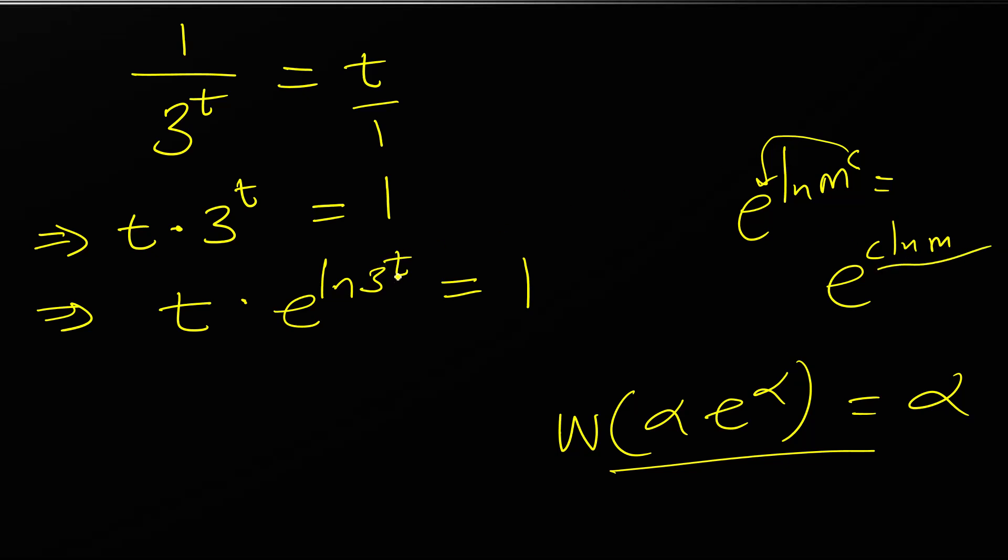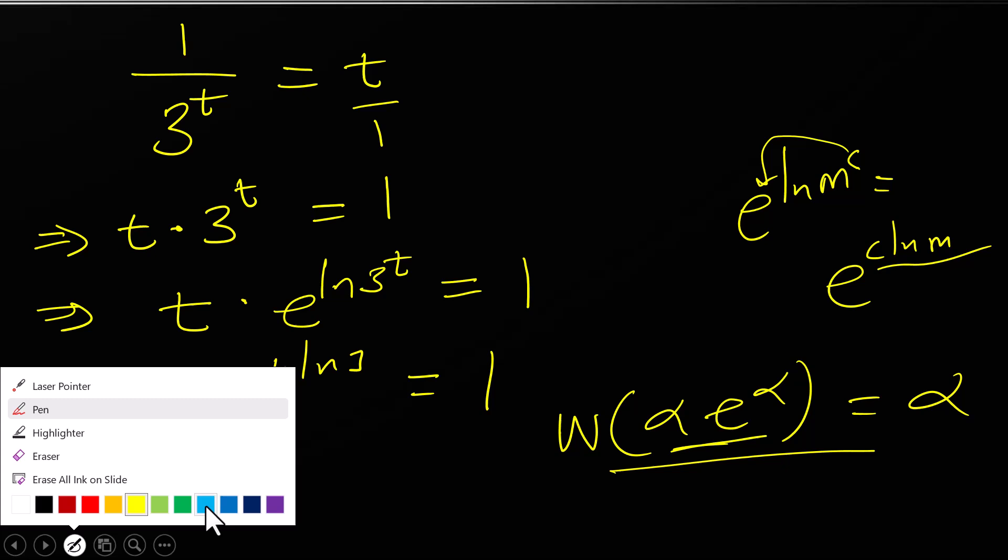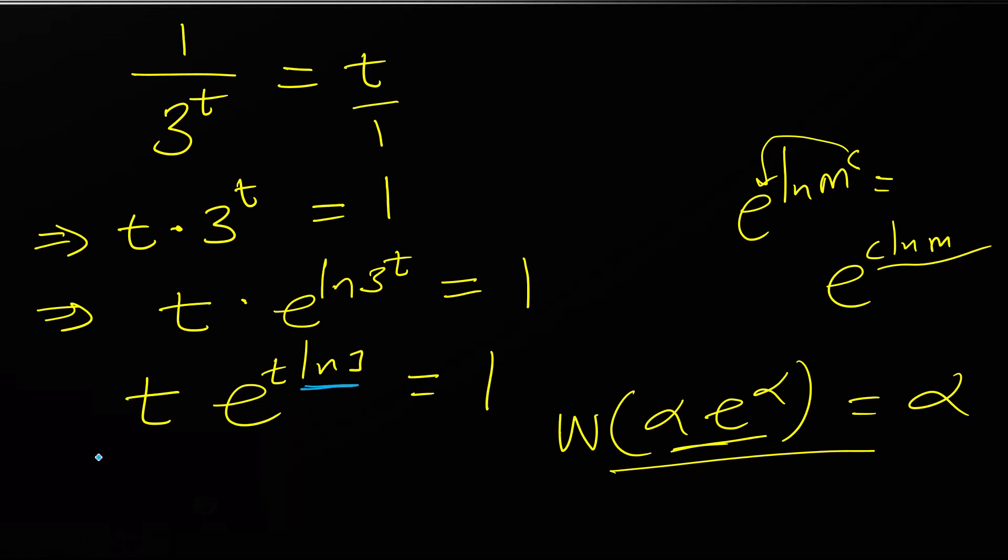We have t times e raised to t ln of 3 equals 1. Remember we are working towards this, so what is here must be equal to what is here. Let's observe that we have t ln of 3 and we have only t. We have ln of 3, this one is missing. What we are going to do is multiply both sides by this in order to balance it, therefore making it possible to find the Lambert W function.